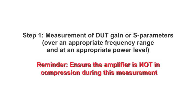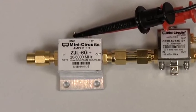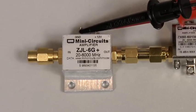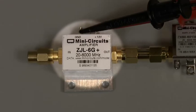Step one is the measurement of the DUT gain or S parameters over the frequency range of interest. Ensure the amplifier is not in compression during this measurement. In this demonstration, we will be measuring the noise figure of a mini-circuits six gigahertz amplifier. Since gain is a basic VNA measurement, we won't walk through the measurement process.